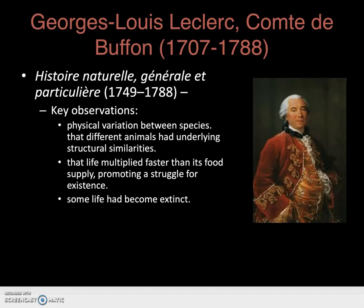Getting into it, we see one of the early theorists of population here, writing between 1749 and 1788 on natural history in general. Some of the key observations that come out of this work we might extend to others later on. Key observations include: physical variation between species — that different animals had underlying structural similarities — that life multiplies faster than its food supply, promoting a struggle for existence, and that some life had in fact become extinct.